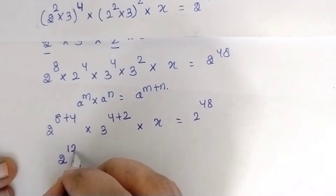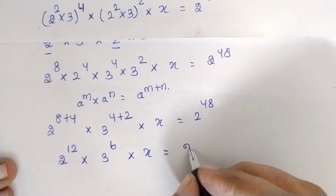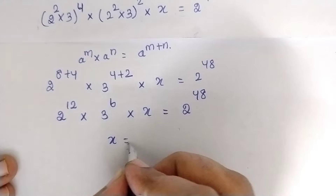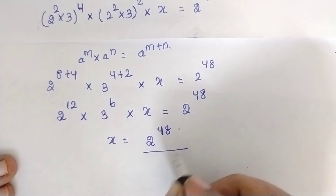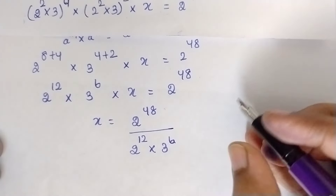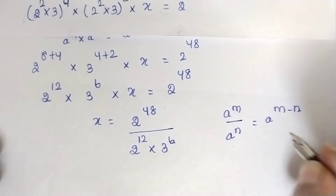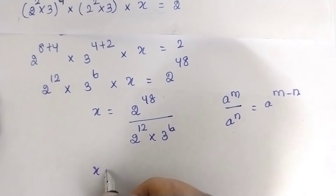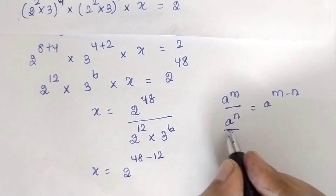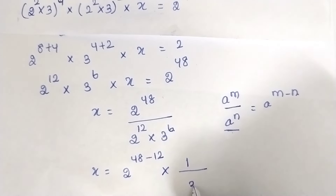So 2^12 multiplied by 3^(4+2) = 3^6, multiplied by x, equals 2^48. Now I need only the x value, so x equals 2^48 divided by (2^12 multiplied by 3^6). Applying the rule a^m ÷ a^n = a^(m−n): x = 2^(48−12) multiplied by (1 ÷ 3^6), giving 2^36 divided by 3^6.